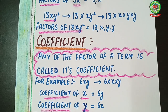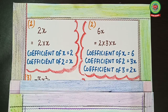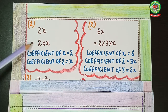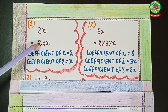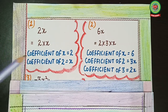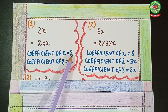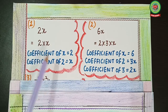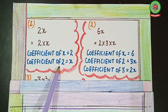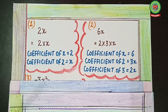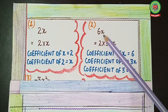We'll do a couple of examples for better understanding. First example: 2x. We factorize as 2 × x. If they ask for the coefficient of x, we hide x — what is left is 2. So the coefficient of x is 2. If they ask for the coefficient of 2, we hide 2 — what is left is x. So the coefficient of 2 is x.